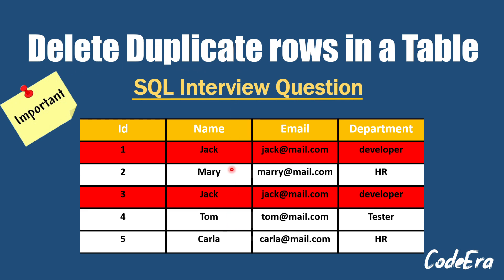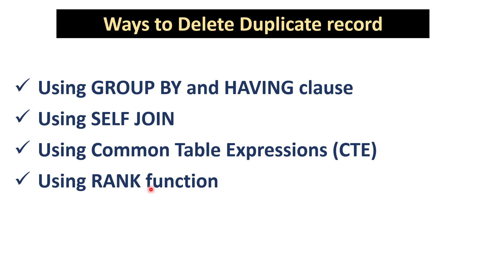We can delete duplicate records in the following ways: using GROUP BY and HAVING clause, using self join, using common table expressions or CTE, and by using the RANK function. But in today's video we will only cover two of these — GROUP BY with HAVING clause, and self join.